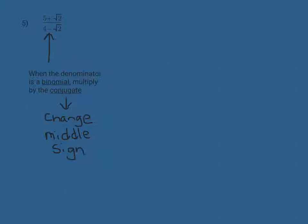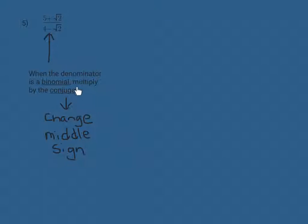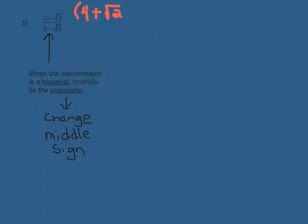In number 5 we now have a binomial denominator — two terms separated by a subtraction sign. Whenever you have a binomial denominator, you multiply the numerator and denominator by what we call the conjugate. The conjugate means you take the expression 4 minus radical 2 and change the middle sign. So the conjugate of 4 minus radical 2 is 4 plus radical 2, and that is what we multiply the top and bottom of this fraction by.